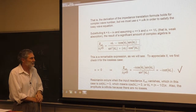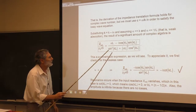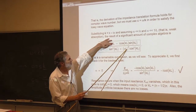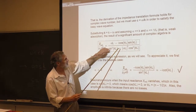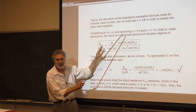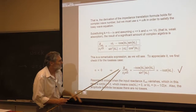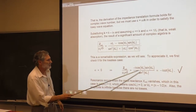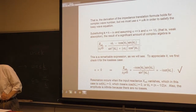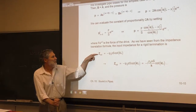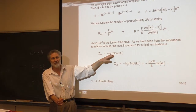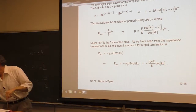Before we do that, the first thing we better do is check it. When there's no absorption — if we set alpha equal to zero — those terms vanish, and we get the cotangent of KL minus i. That's exactly what we should get, as we saw in the first lecture of this chapter. So it checks in that case.